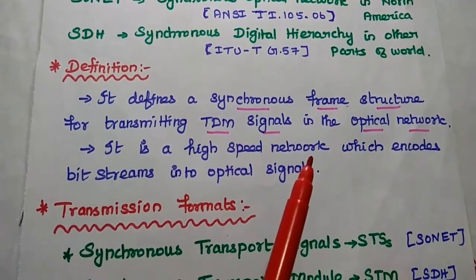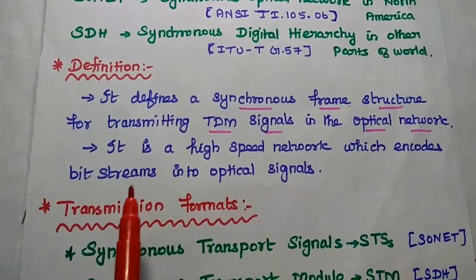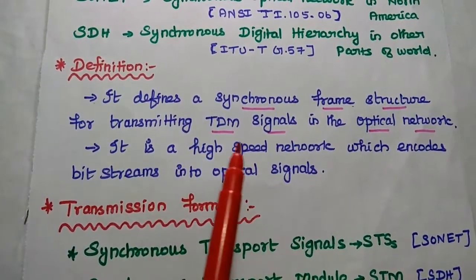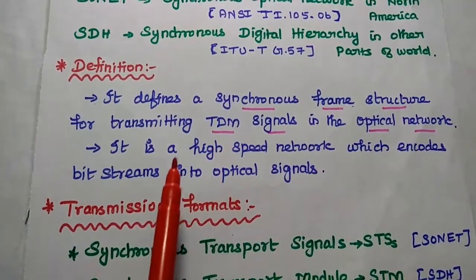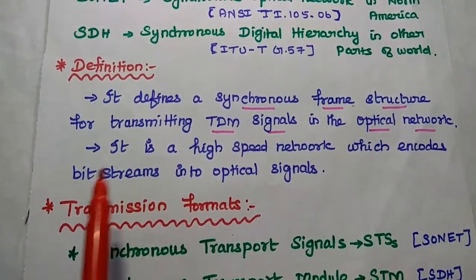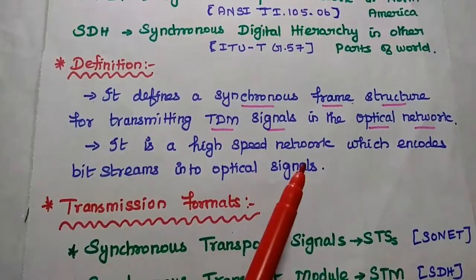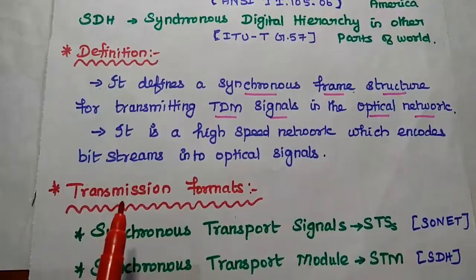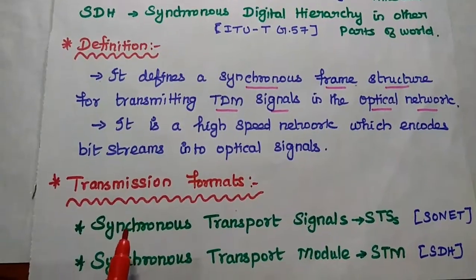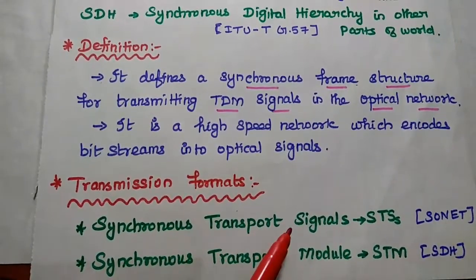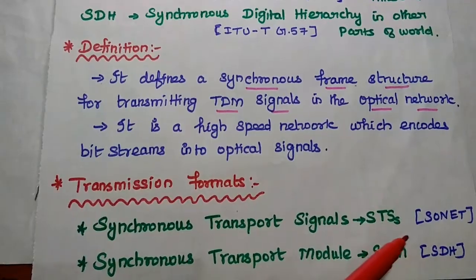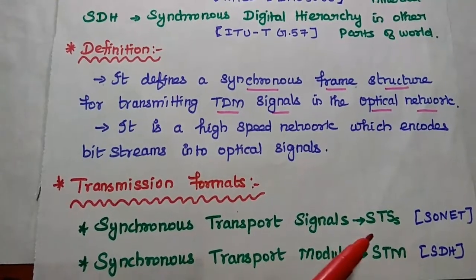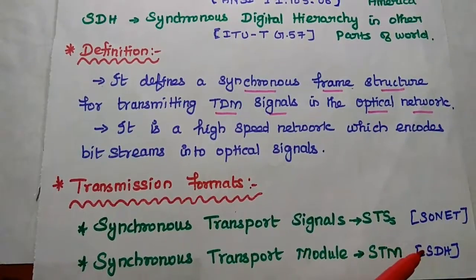It is a high speed network which encodes bit streams into optical signals in digital format. We can use two types of transmission formats: Synchronous Transport Signals (STS) for SONET, and Synchronous Transport Module (STM) for SDH.